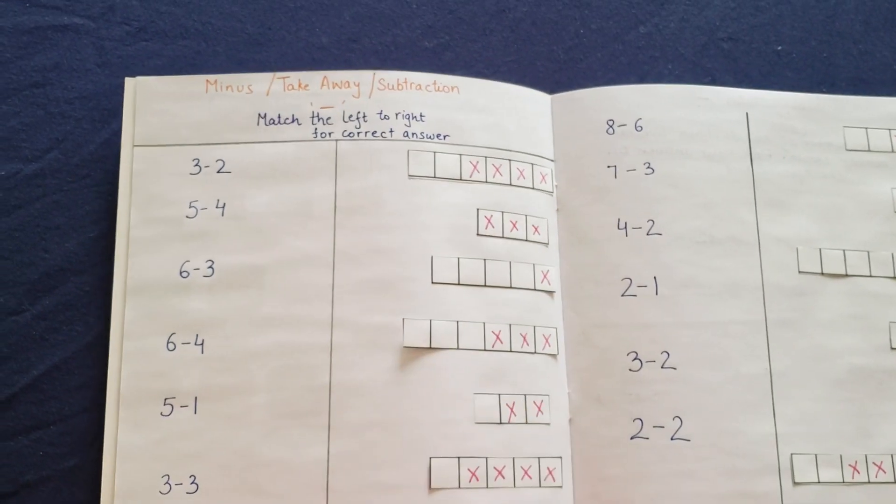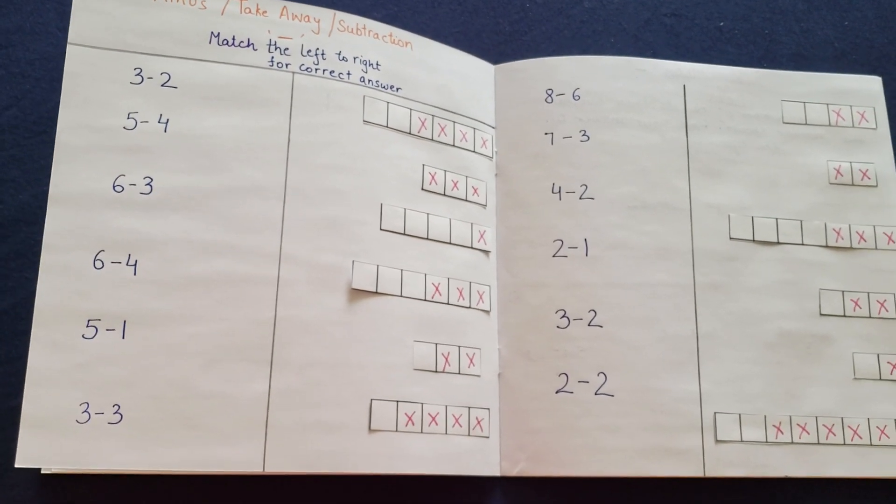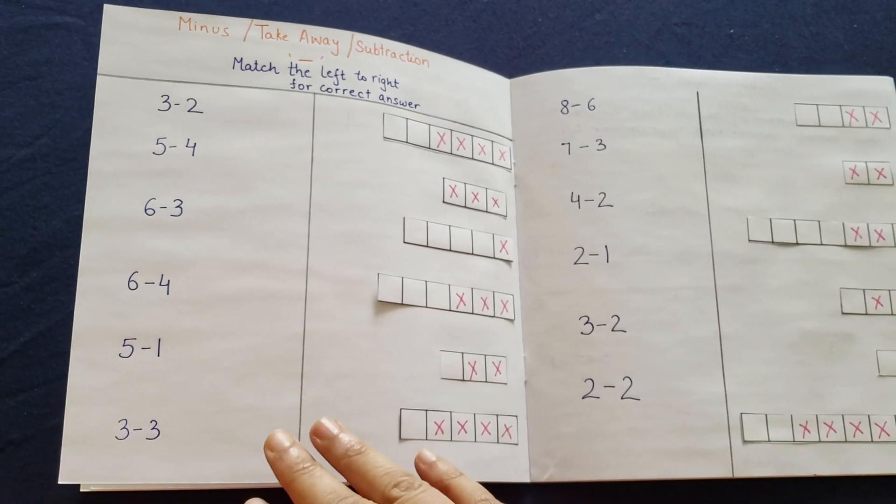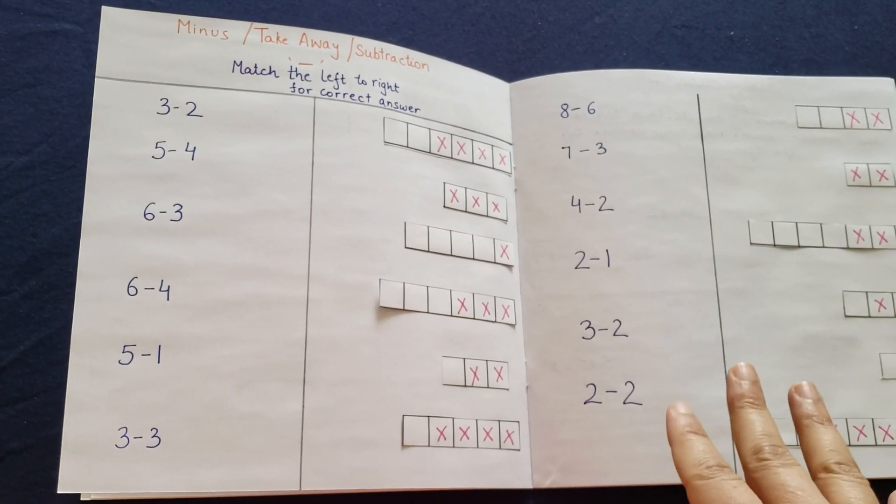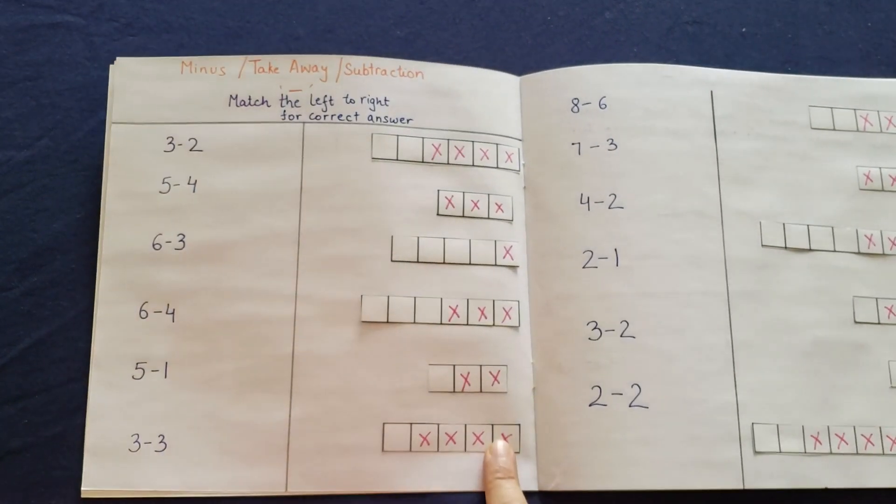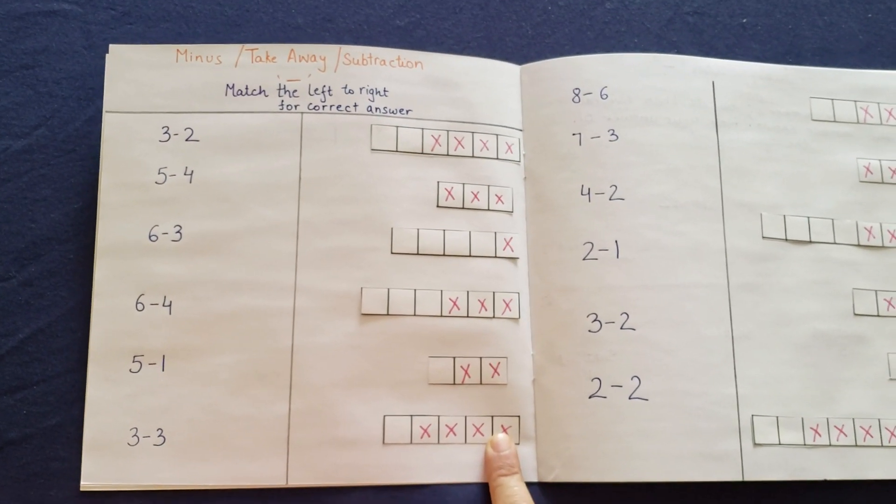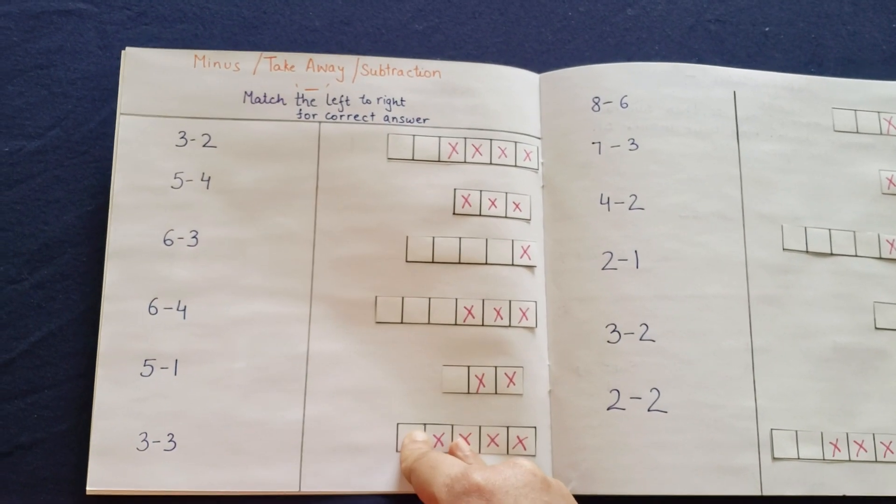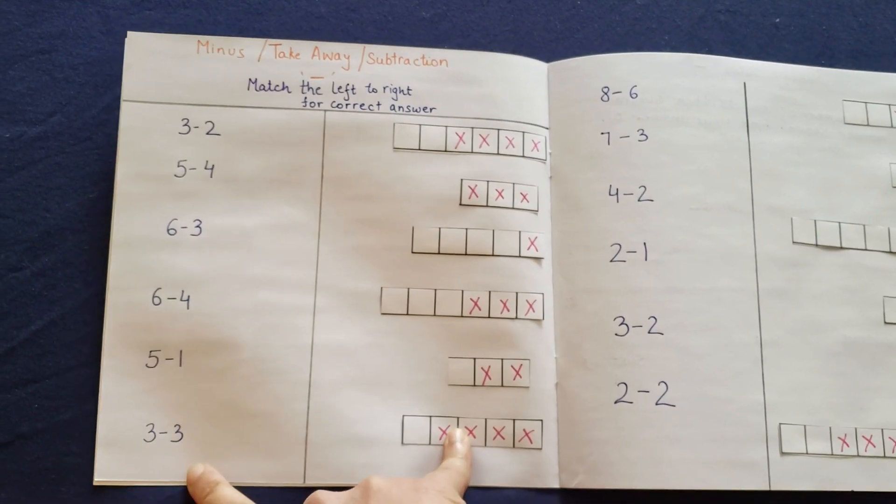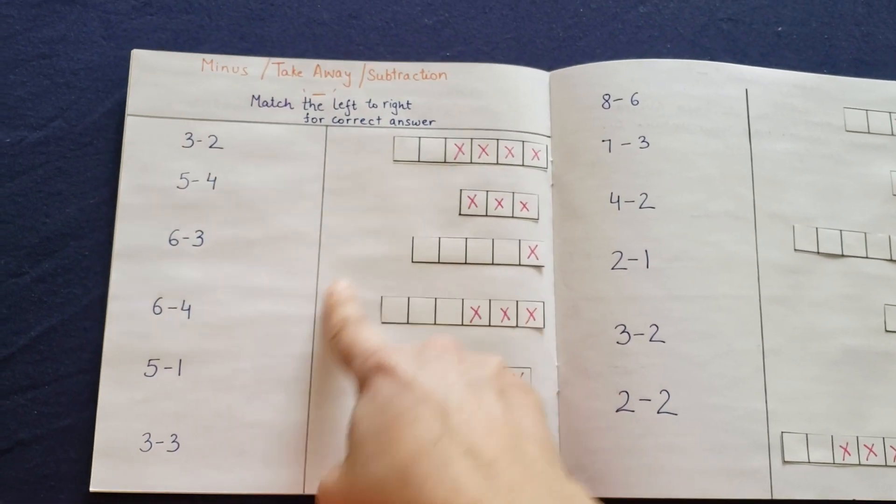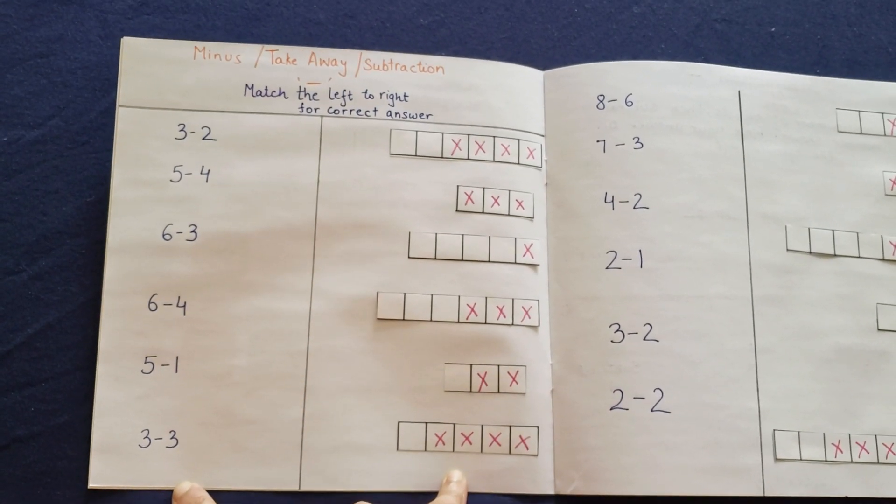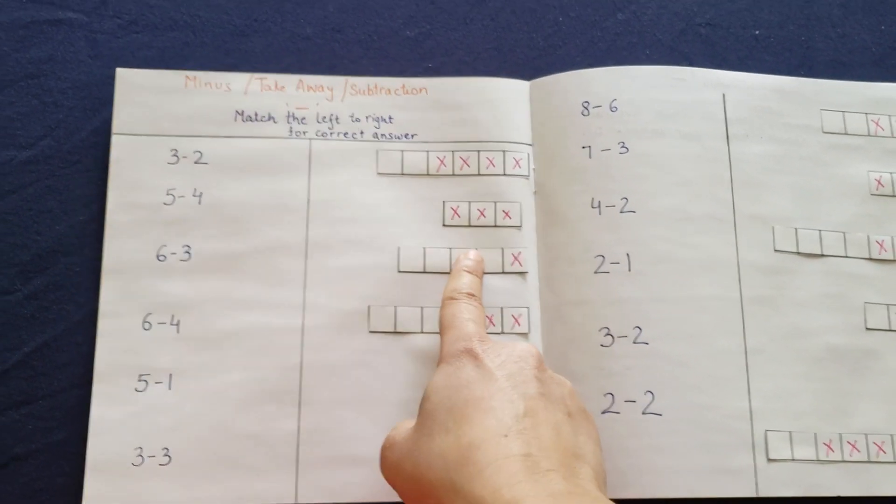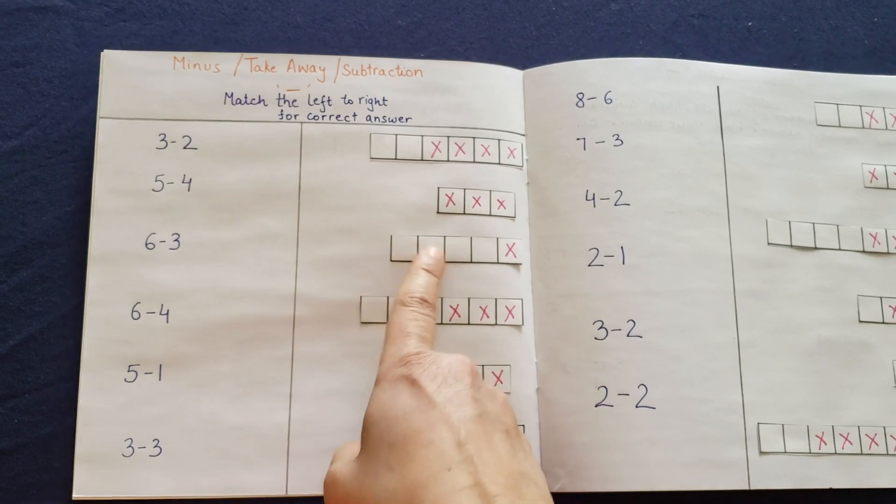Okay, minus, take away, subtraction. Match the left to the right for correct answers. So you have six questions here and six questions here. You have the solution right here. You have to match. It's not always you have to take out the solution, it's also to interpret the same thing in a different way. So you have three minus three that goes right here. She needs to tag it together. Five minus one, it's right here, it's four.